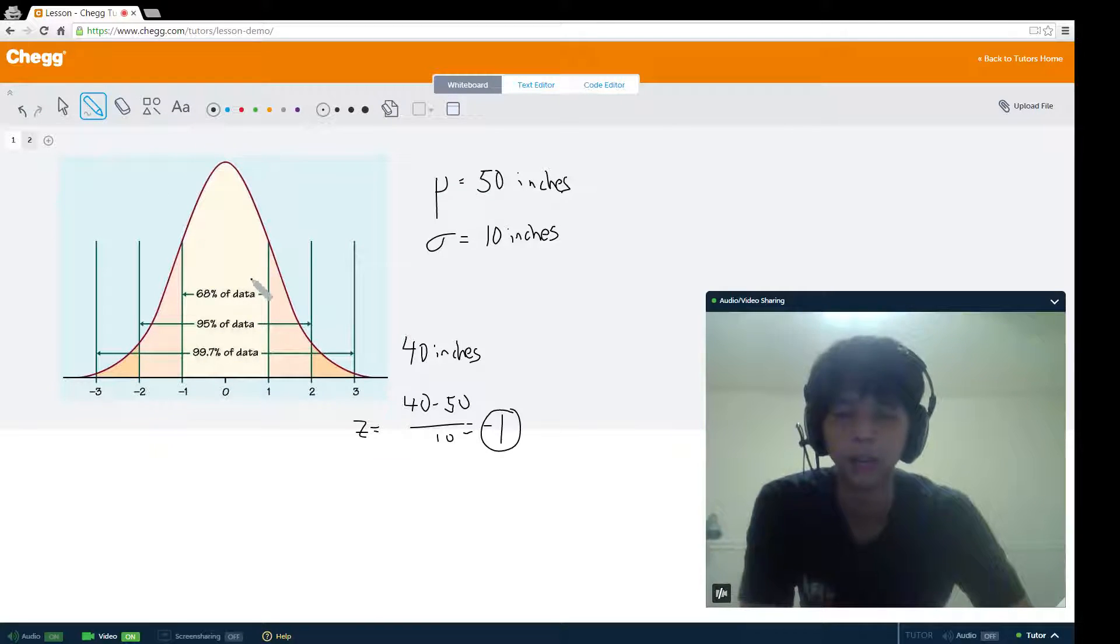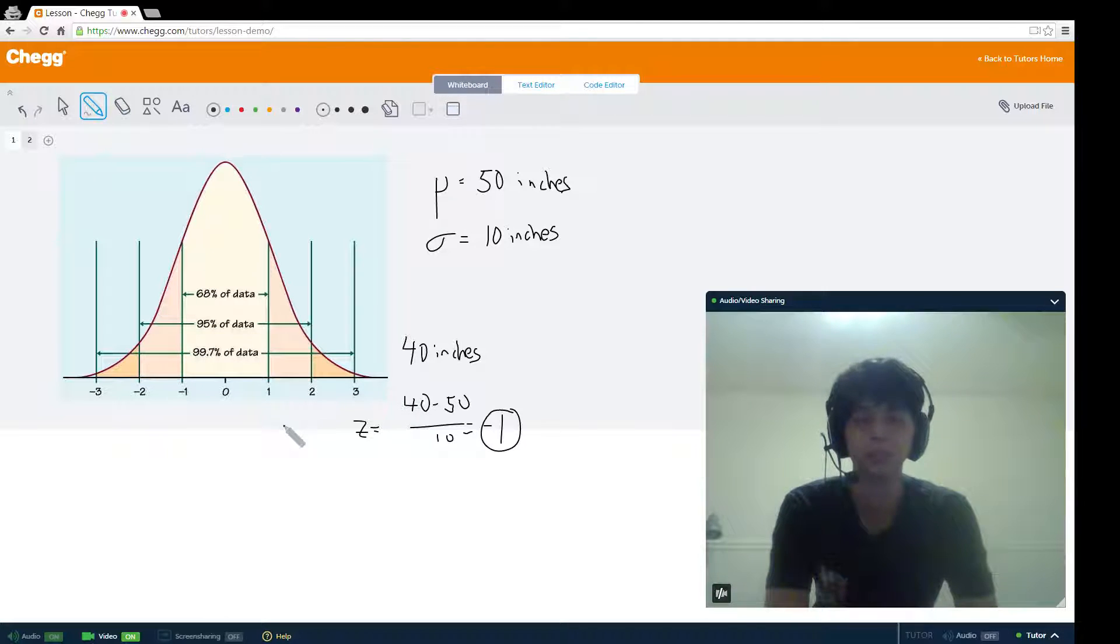How can you calculate these boundary heights? Well, you know that the z-scores of those boundary heights are going to be at negative 1 and 1, because we just covered that 68% of the data lies between the z-scores of negative 1 and 1.